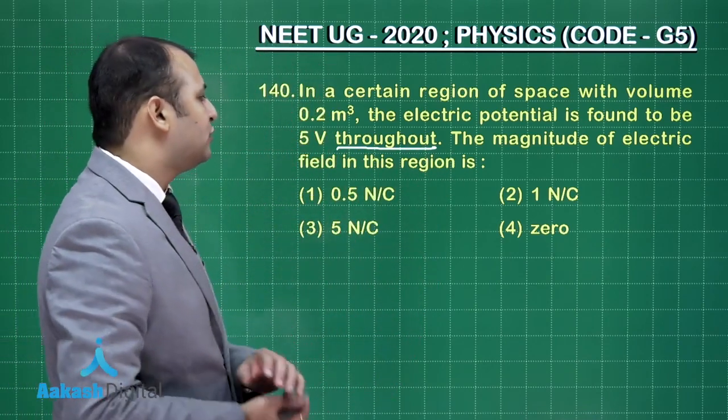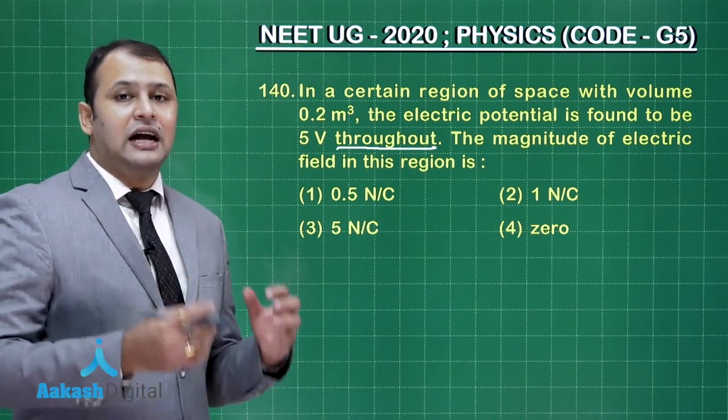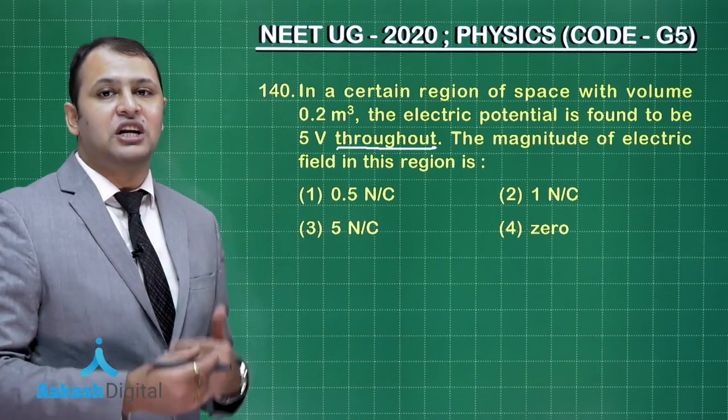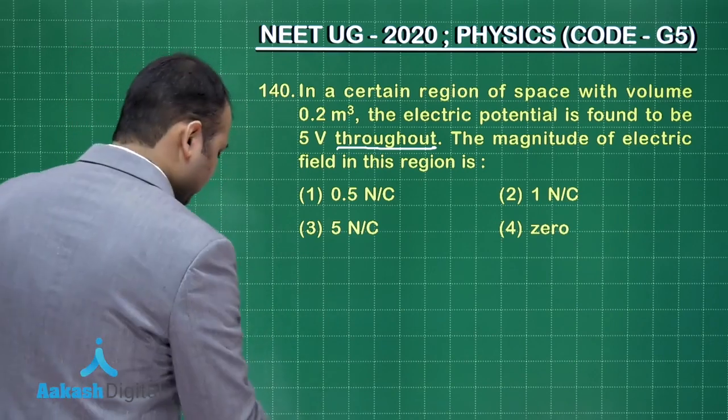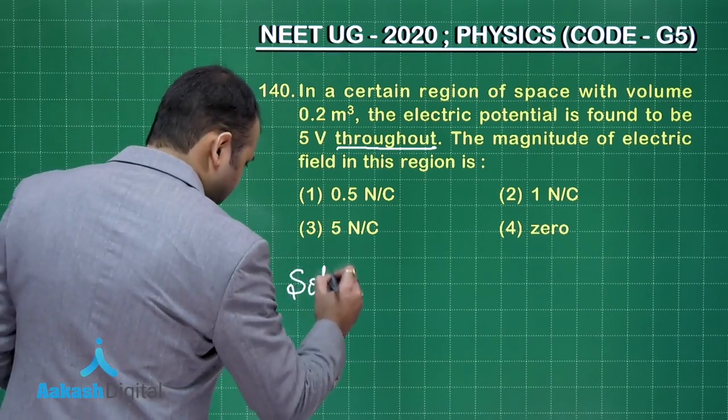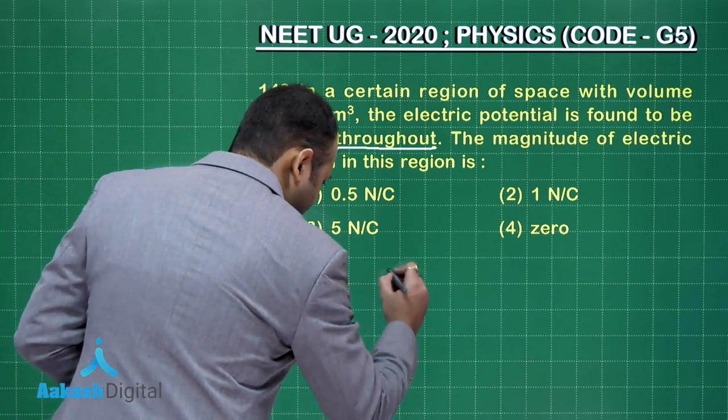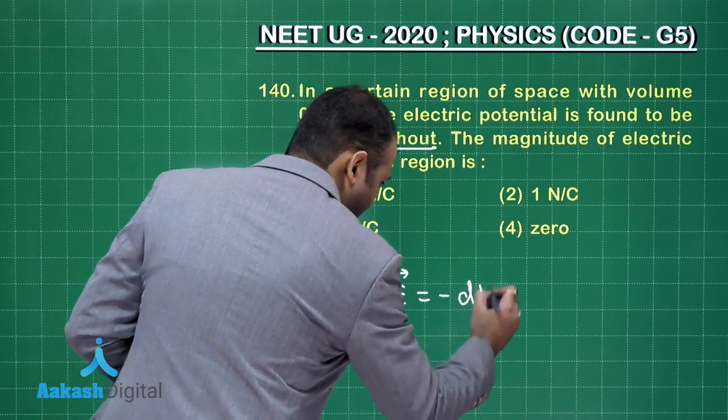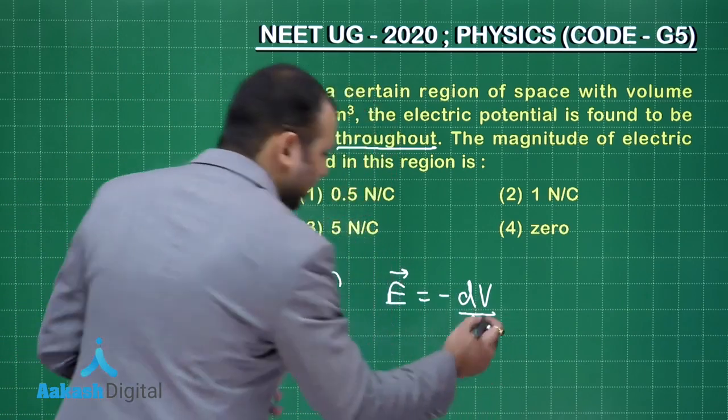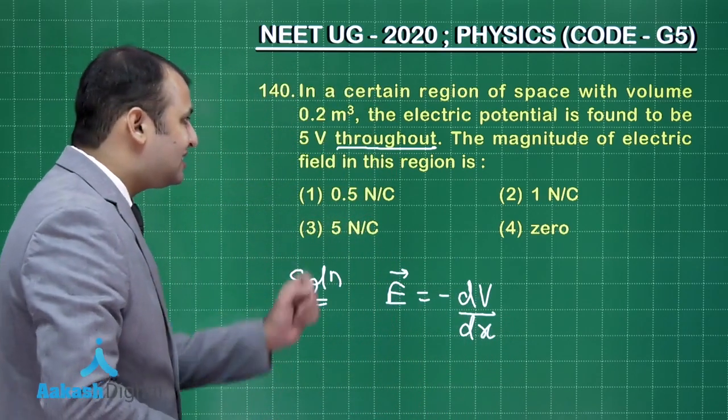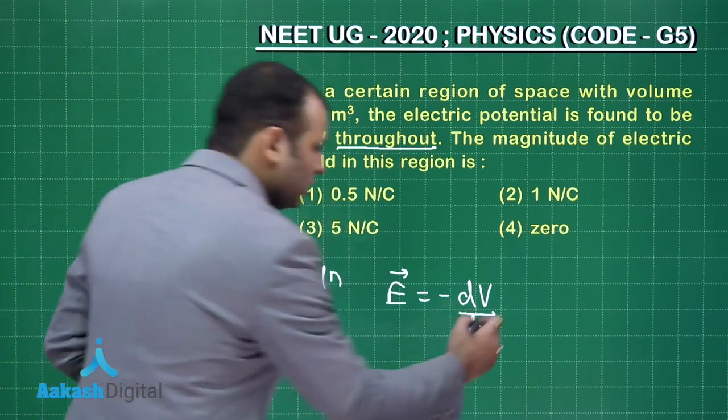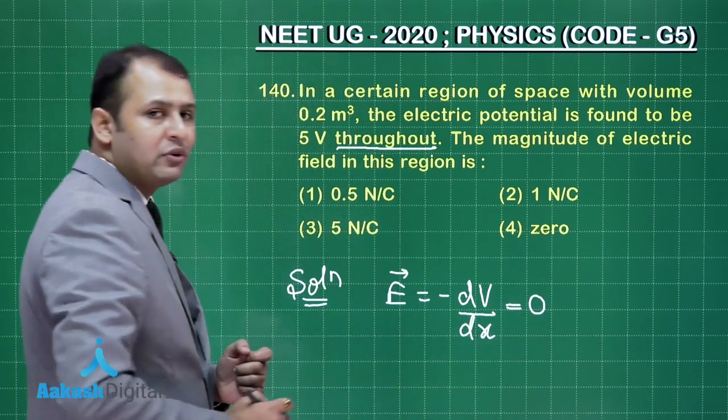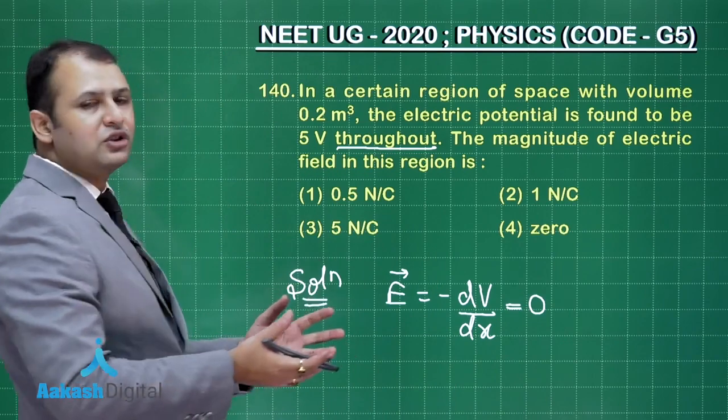The magnitude of electric field in this region is, as we are aware that electric field is defined as a potential gradient of that space. So what we can write here, let's start with the solution. If you write electric field is given by minus of dV by dx or dr, you can go for it. So since the potential is same throughout, this would be 0. Yes, the differential of a constant value is 0.